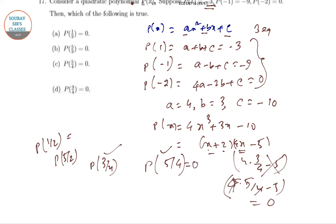So the whole thing will be 0. So P of 5 by 4 equal to 0 is the answer, without solving the entire question as well. So in the next video we will solve some more questions. Stay tuned to our channel. Thank you.